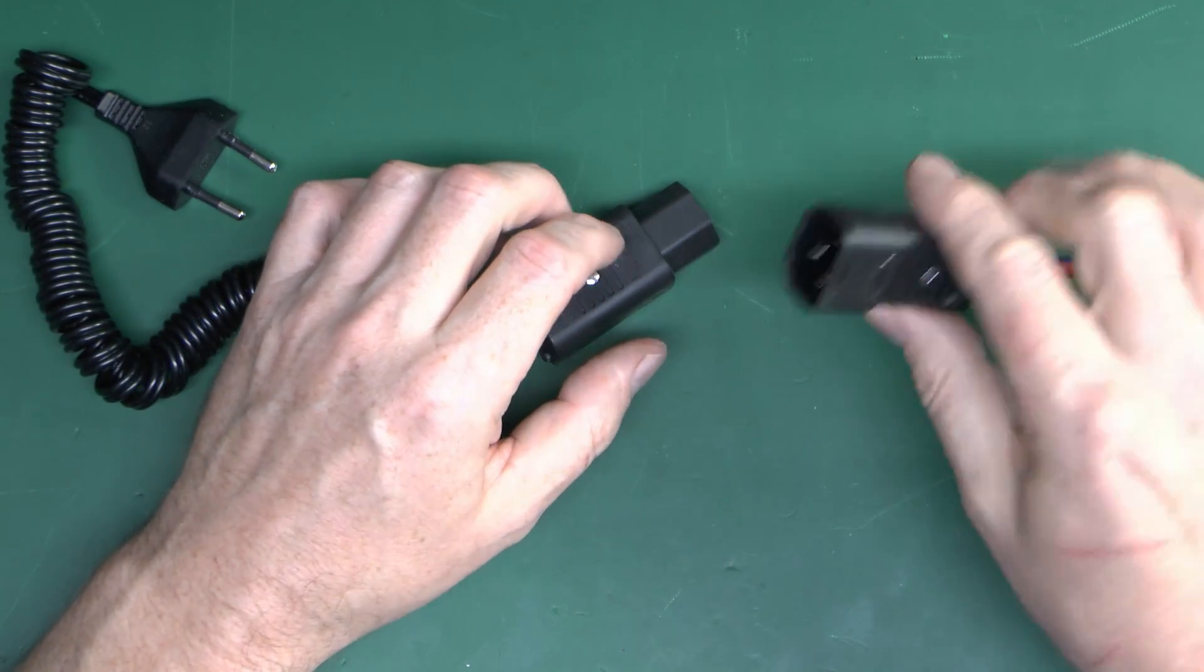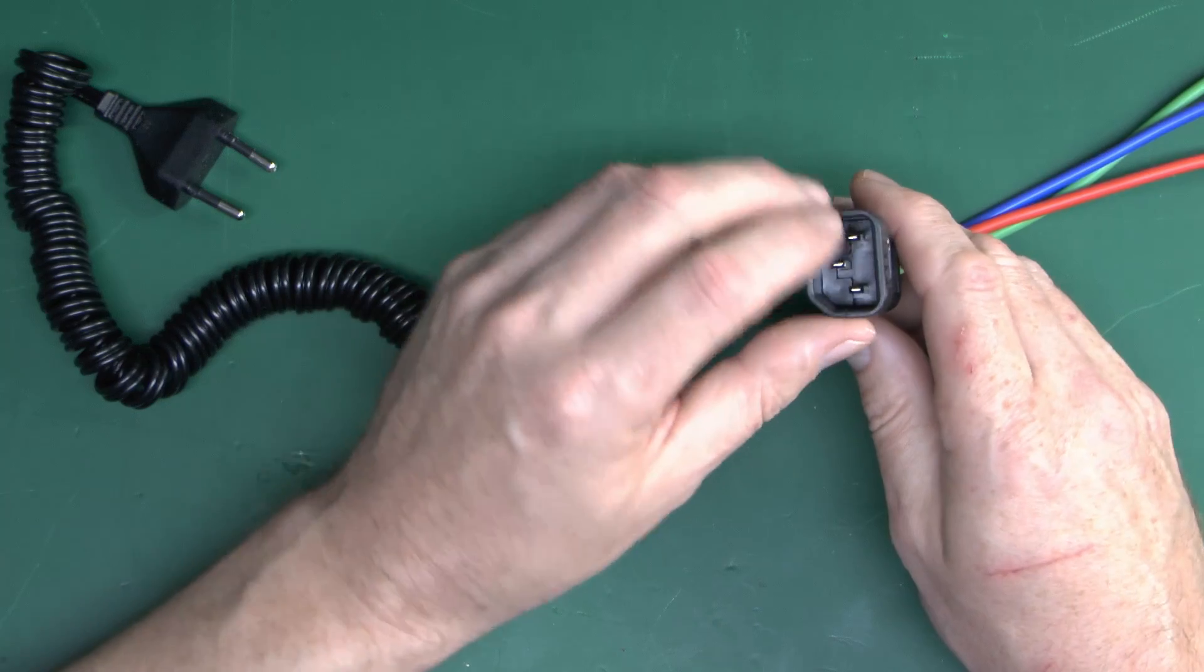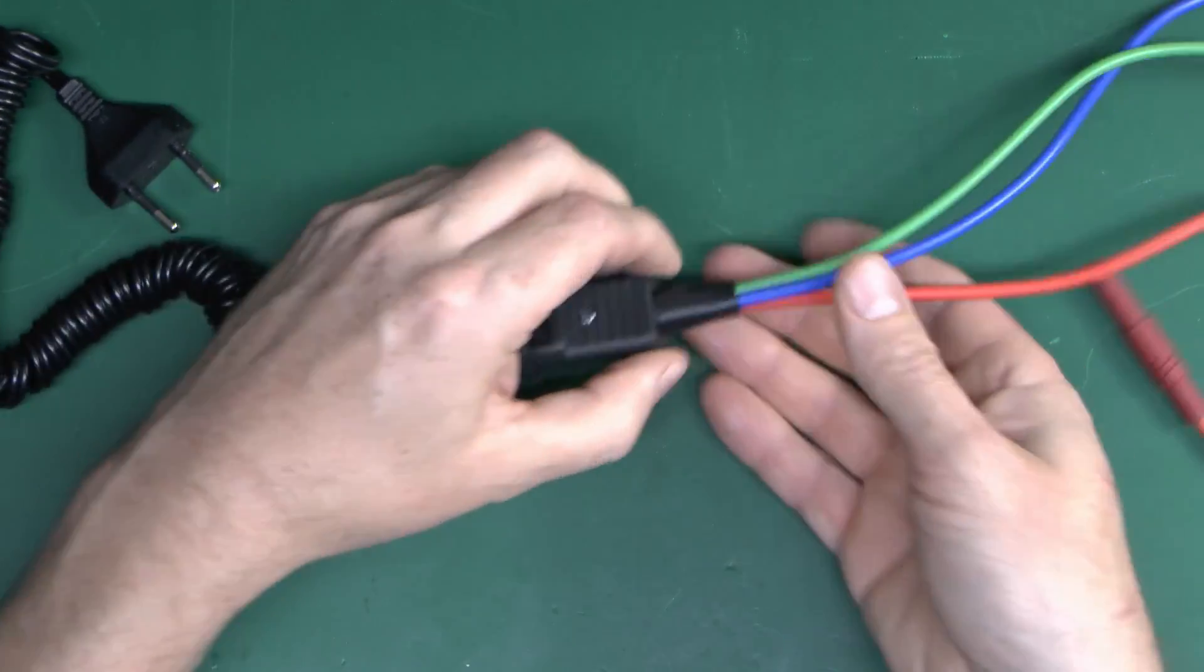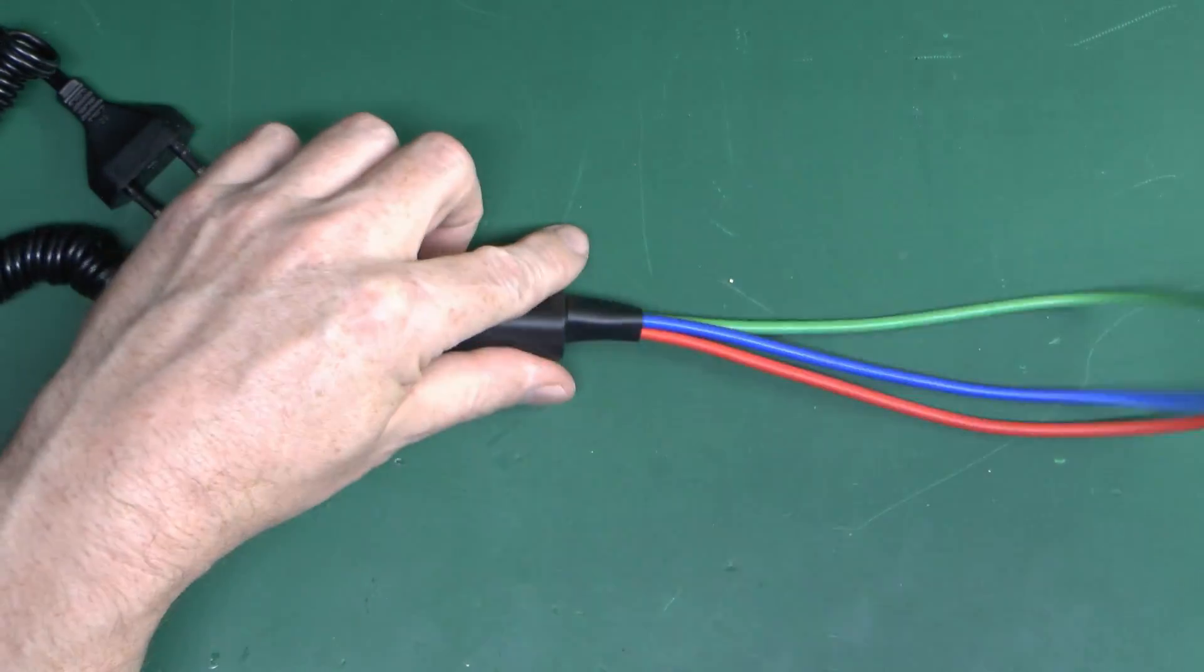And then the other part that goes with this is this bit, which is the one with the pins in it, same make there, so those can plug together. And then inside of this one we have the three leads coming out, and those three would go into your multifunction tester.